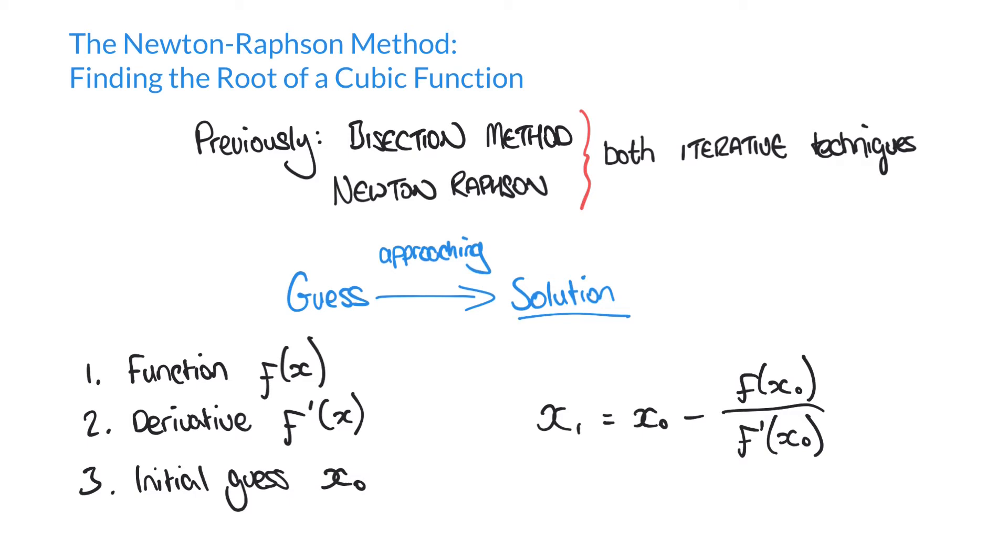We can repeat the same formula but this time substituting x₁ in as our guess, and that time we'll get x₂ as a result. Then we can repeat substituting x₂ into our equation to get x₃, x₄, and so forth. Each iteration that we move through using this Newton-Raphson method will get closer and closer to the correct value for the root of our function. We'll never actually get a perfectly accurate result, but we will get something that is reasonably accurate even after just a few iterations.